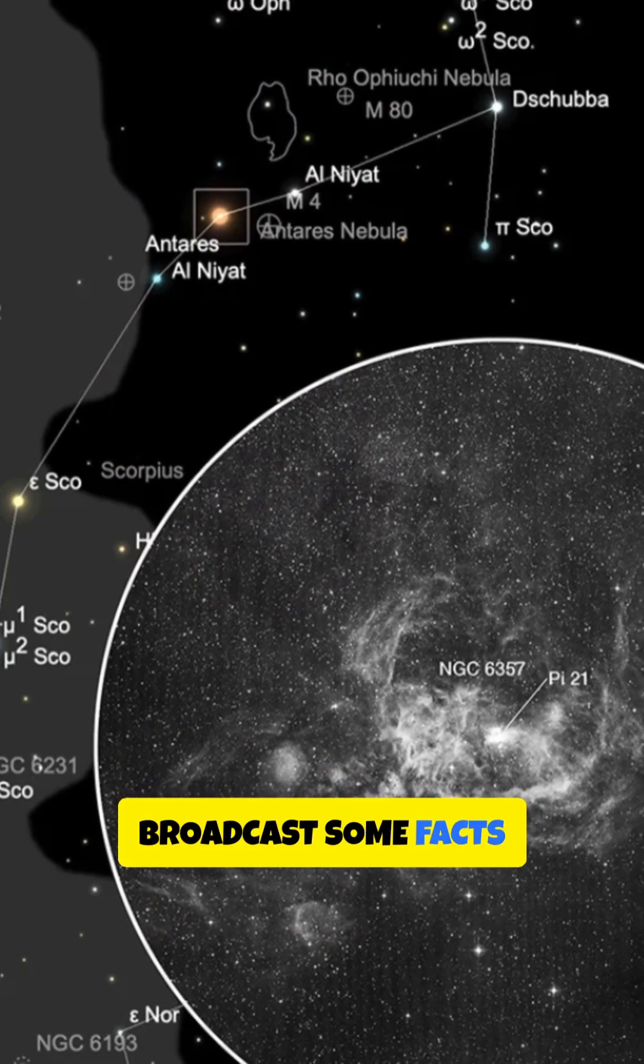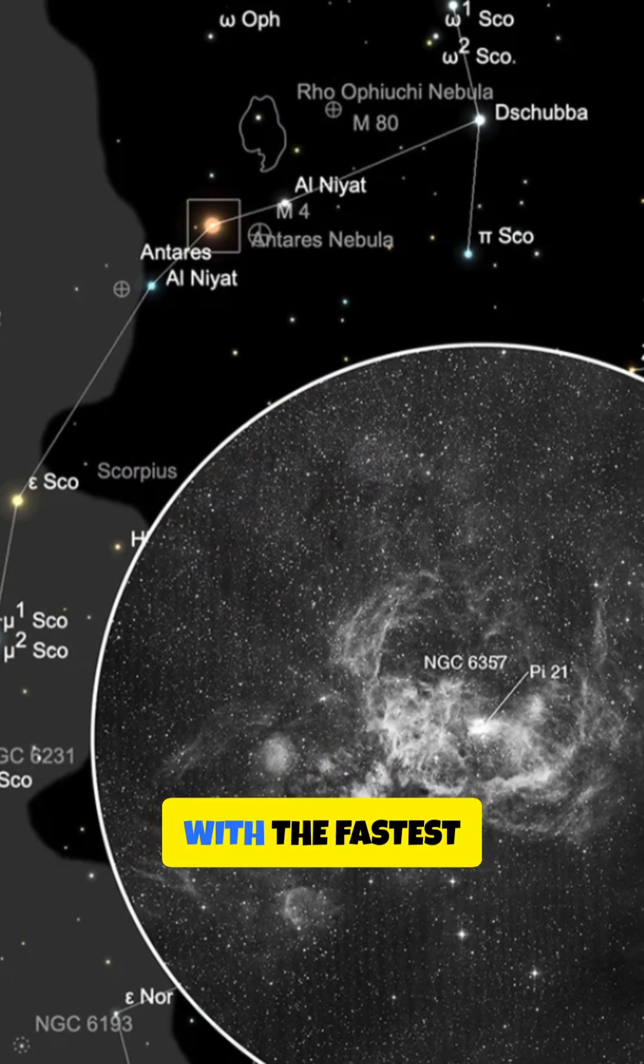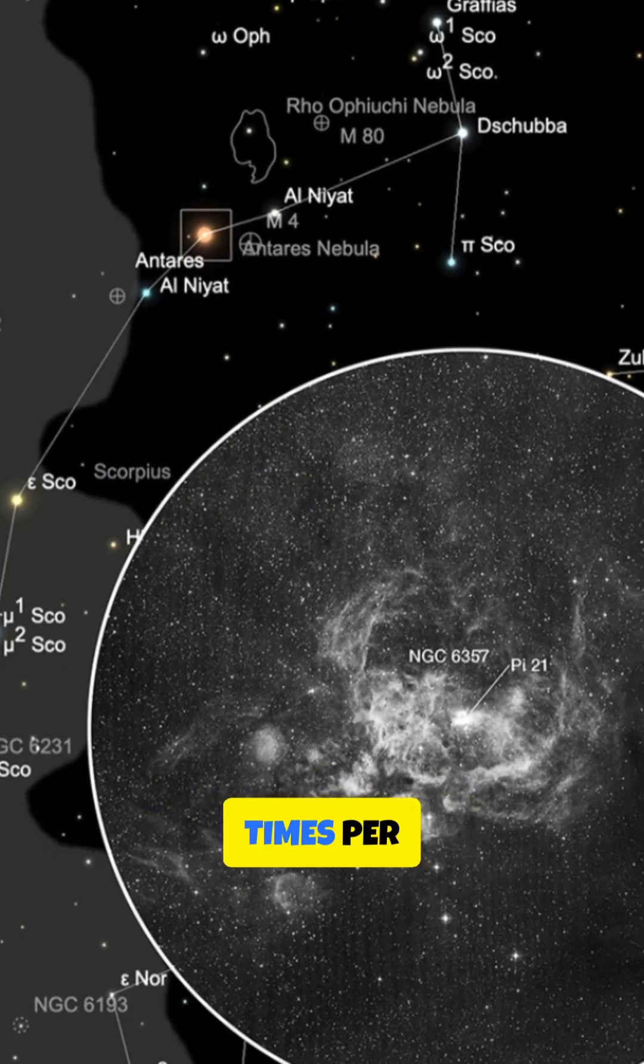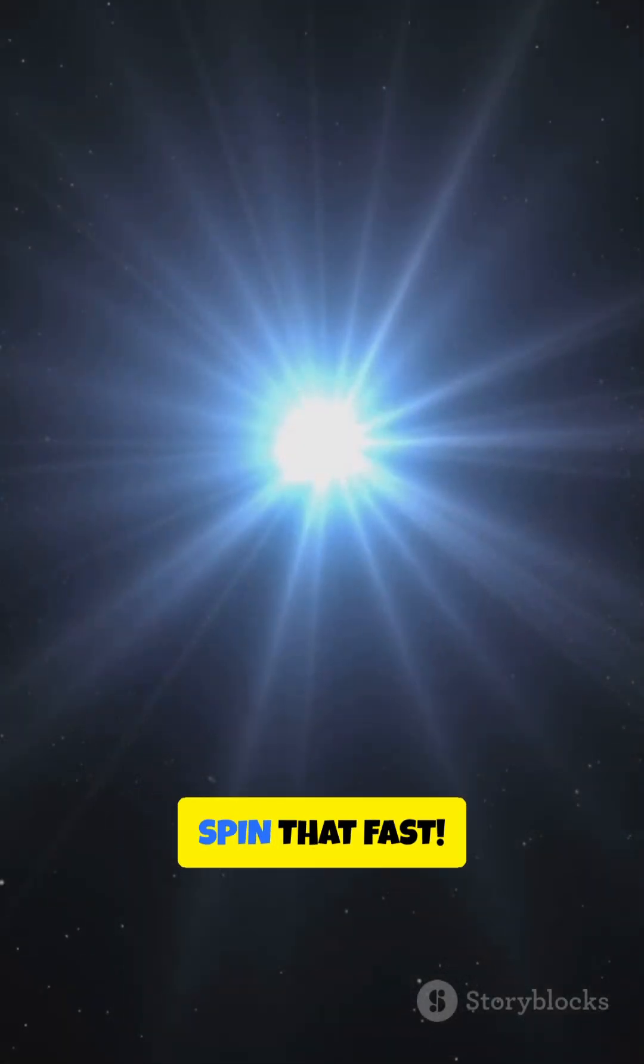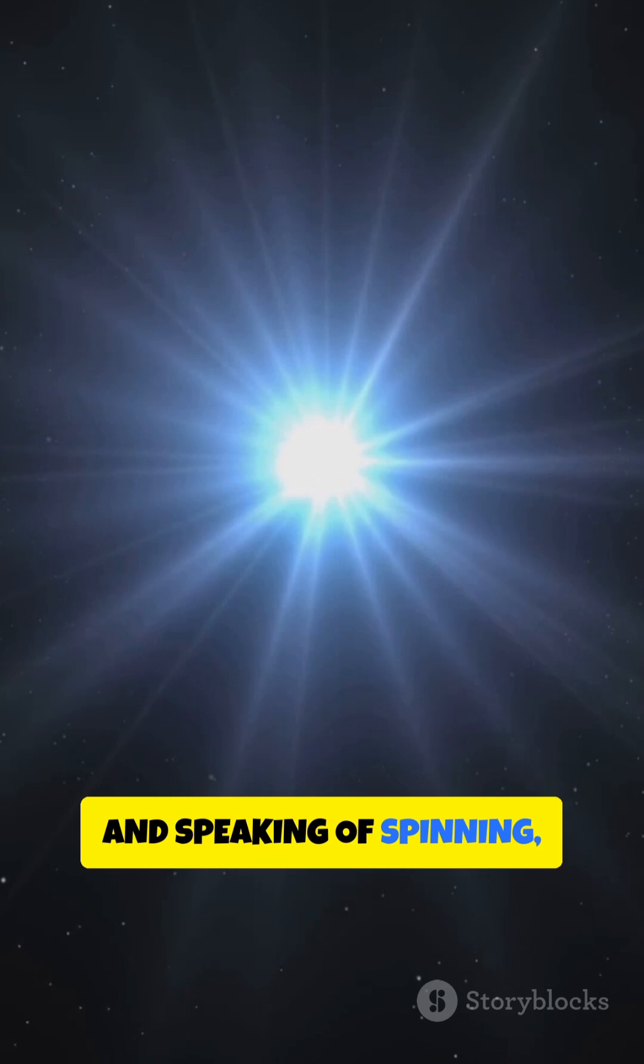Neutron stars can spin at incredible speeds, with the fastest rotating up to 716 times per second, almost a quarter of the speed of light at their surface. Imagine trying to spin that fast. And speaking of spinning,